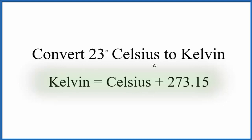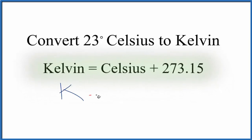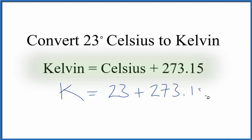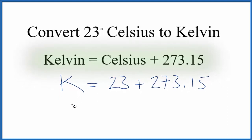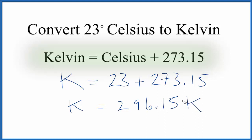We can use it in both instances. Here we have 23 degrees Celsius, so we say Kelvin equals 23 plus 273.15. We add these up and get Kelvin equals 296.15. We put a K after that — we don't put a degrees symbol with Kelvin, it's just K.